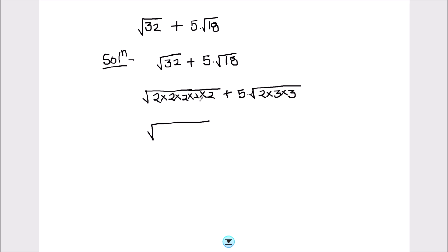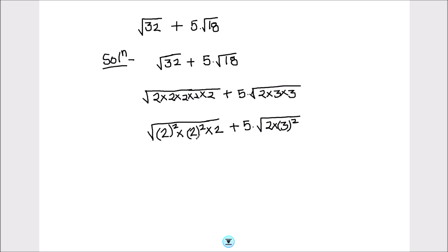In the next step we are going to write the factors in terms of squares, because we are finding the square root, so that we can take the numbers out of the square root sign. So that's 2² times 2² times 2, plus 5 times square root of 2 times 3².